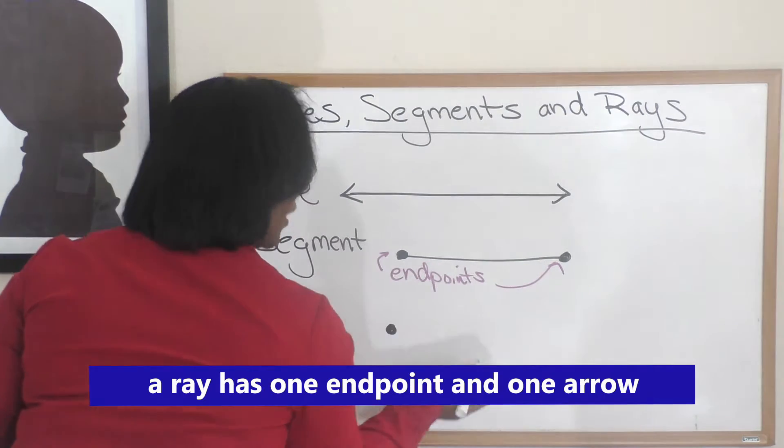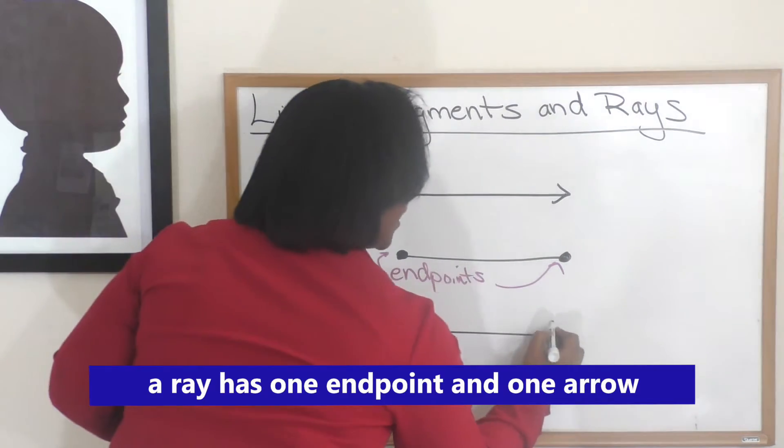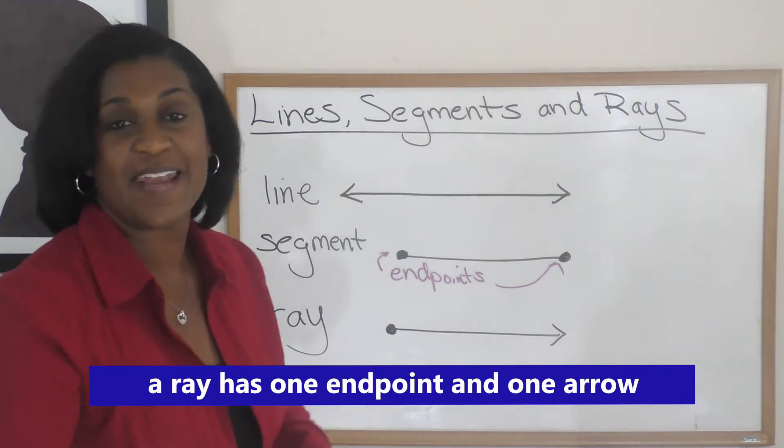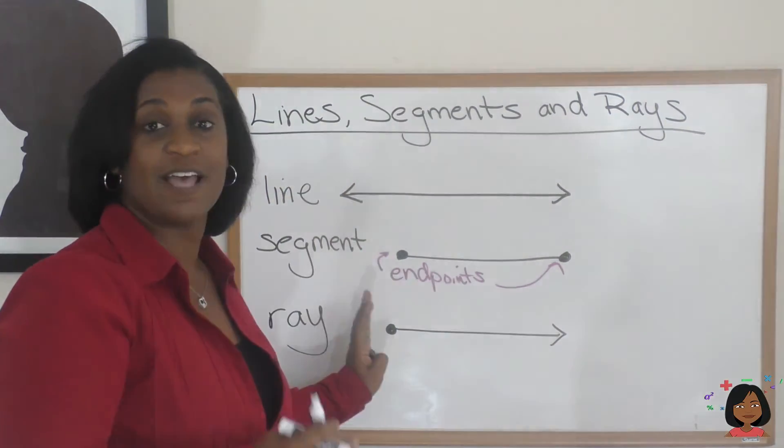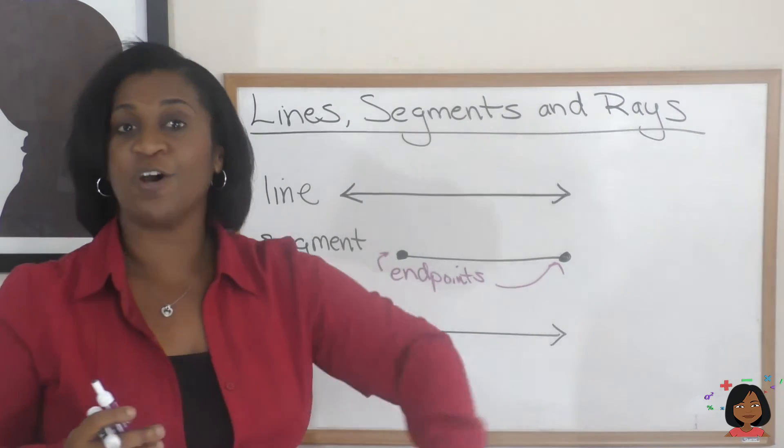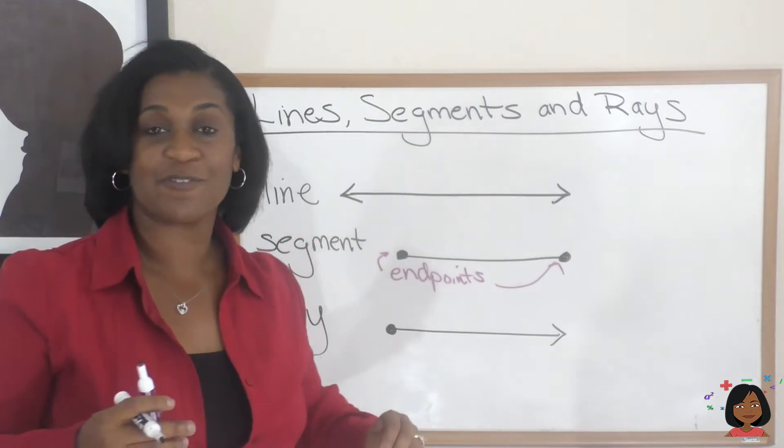We have an endpoint on one end and an arrow on the other, and it means it starts here, a definite start, but then it goes on forever in the other direction.